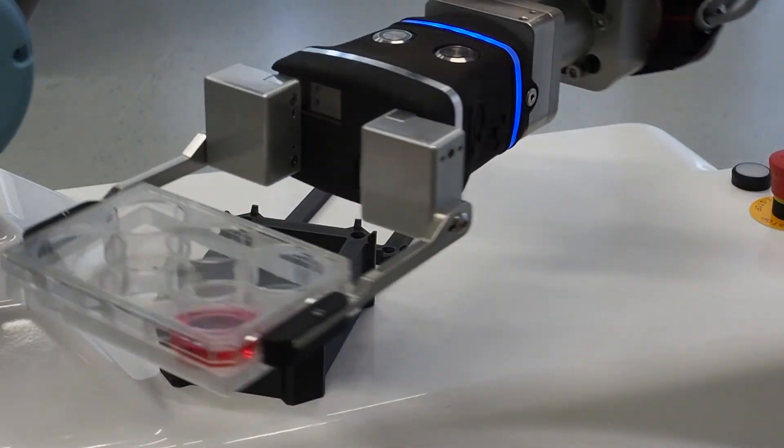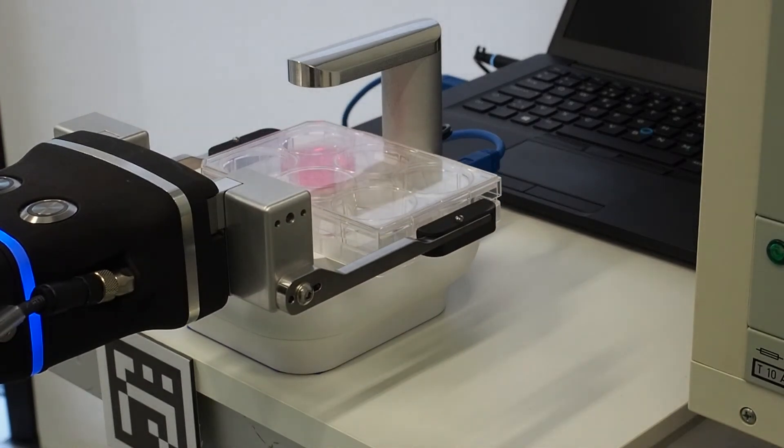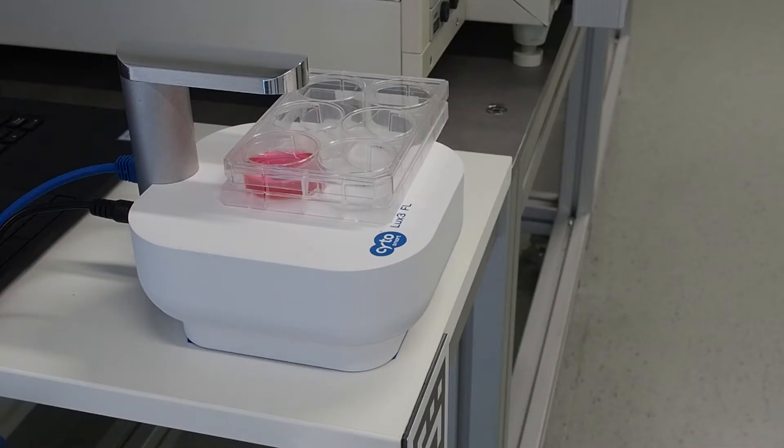The plate is placed on the Cytosmart Lux 3FL for imaging. The green flash is the Cytosmart Lux 3FL capturing an image and the cell confluency algorithm instantly calculates the value.